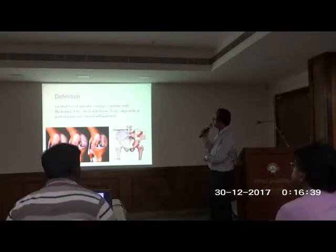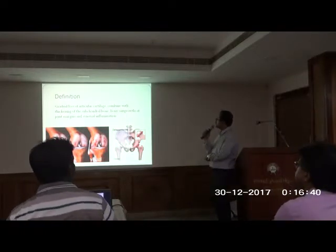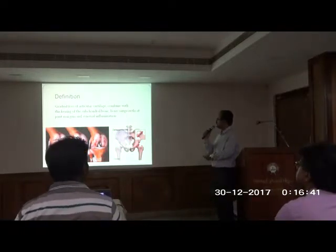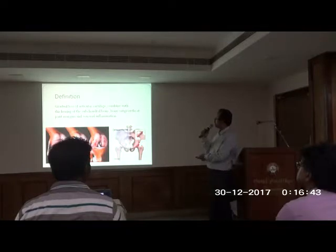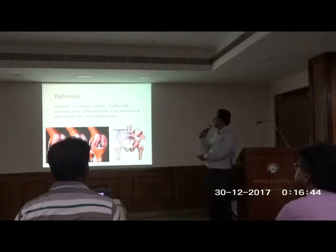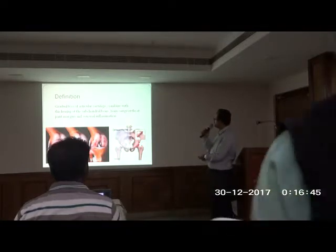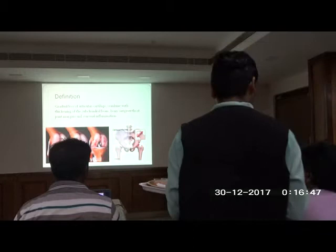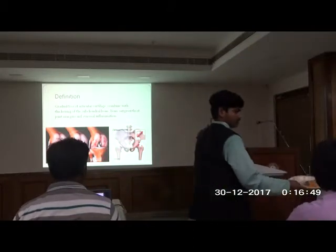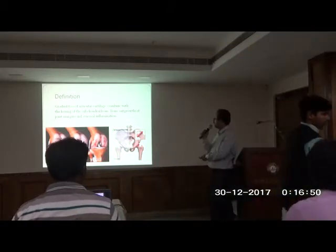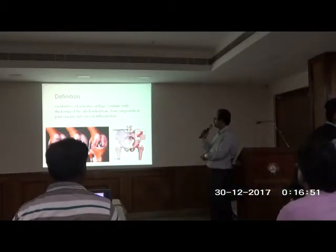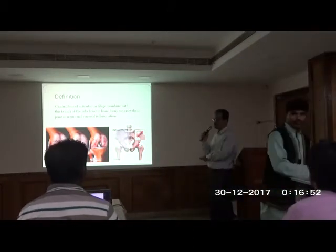By definition, osteoarthritis involves a gradual loss of articular cartilage, associated with subchondral sclerosis and bony outgrowth which is called osteophytes.